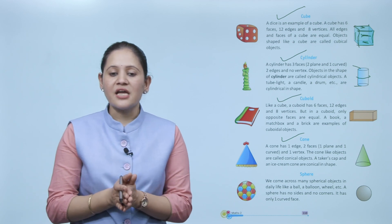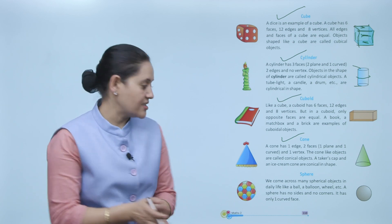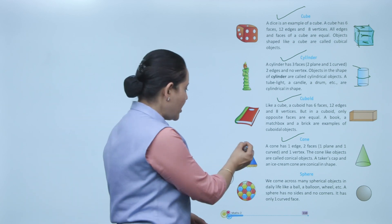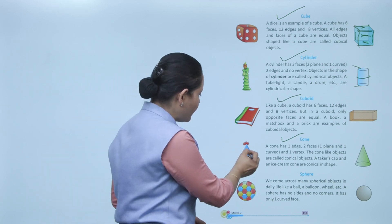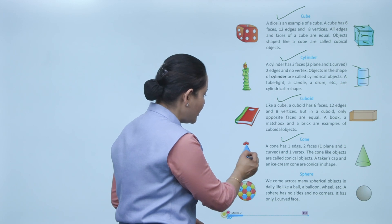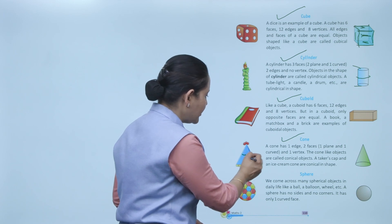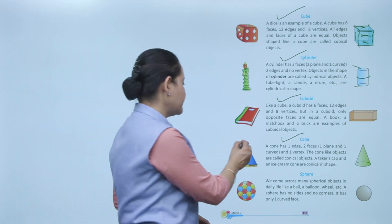Next: cone. A cone has two faces and one edge, and one vertex.